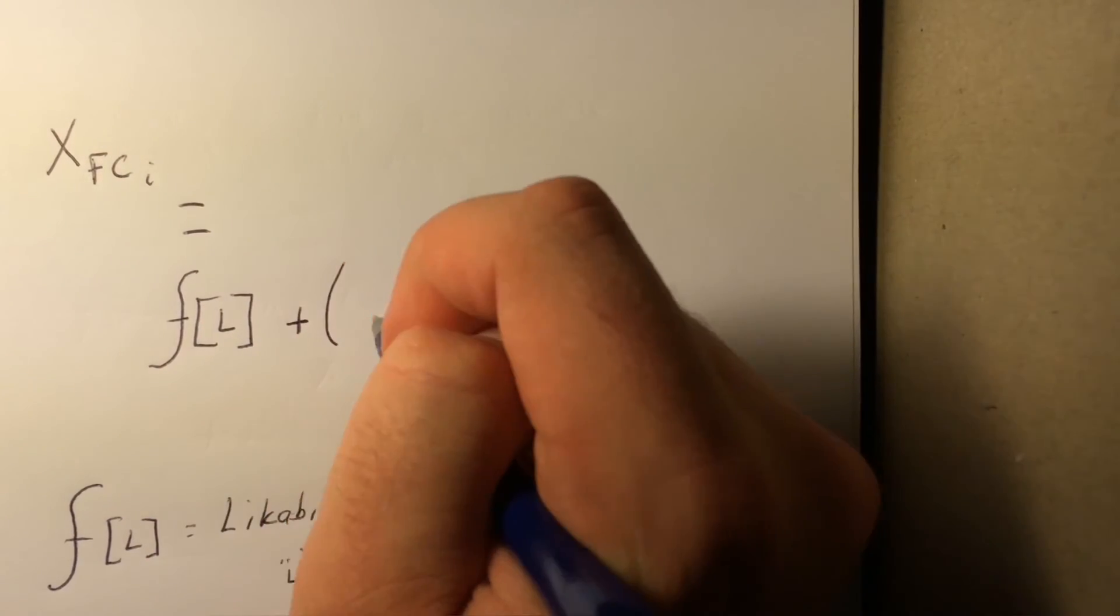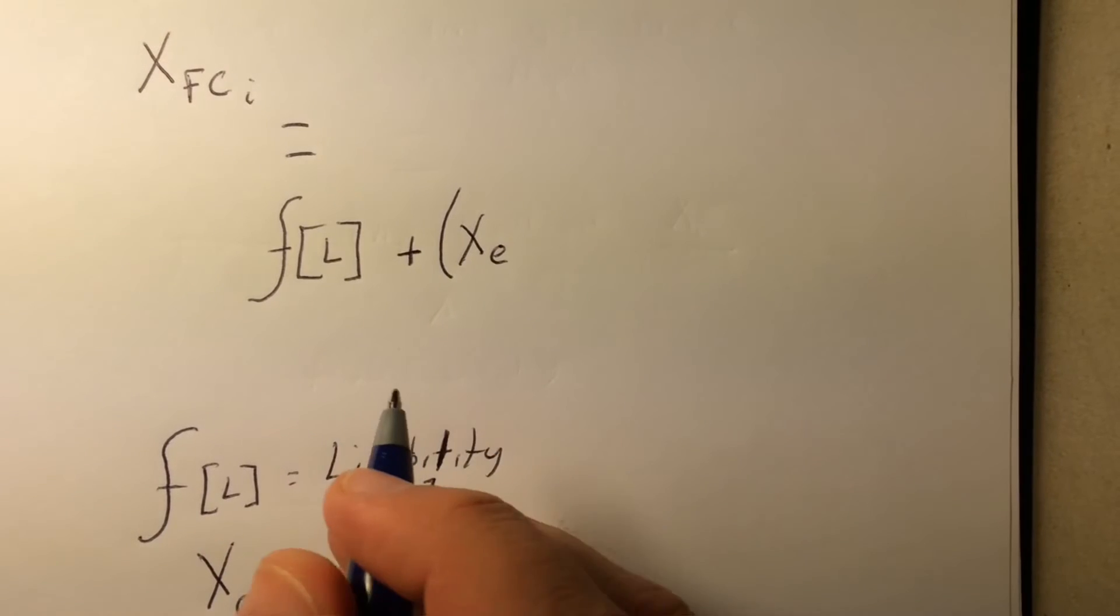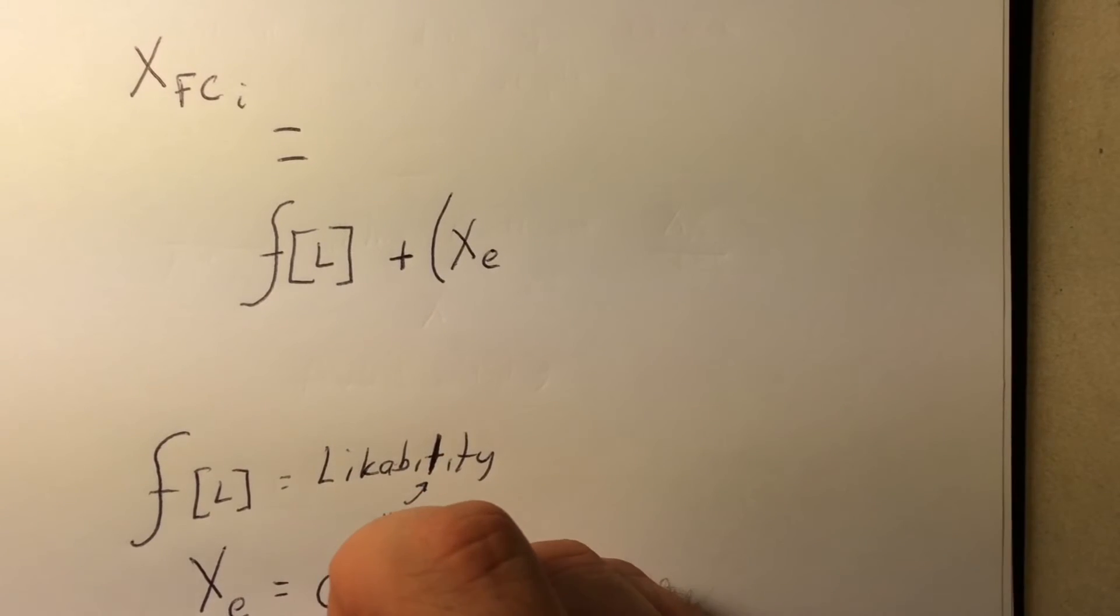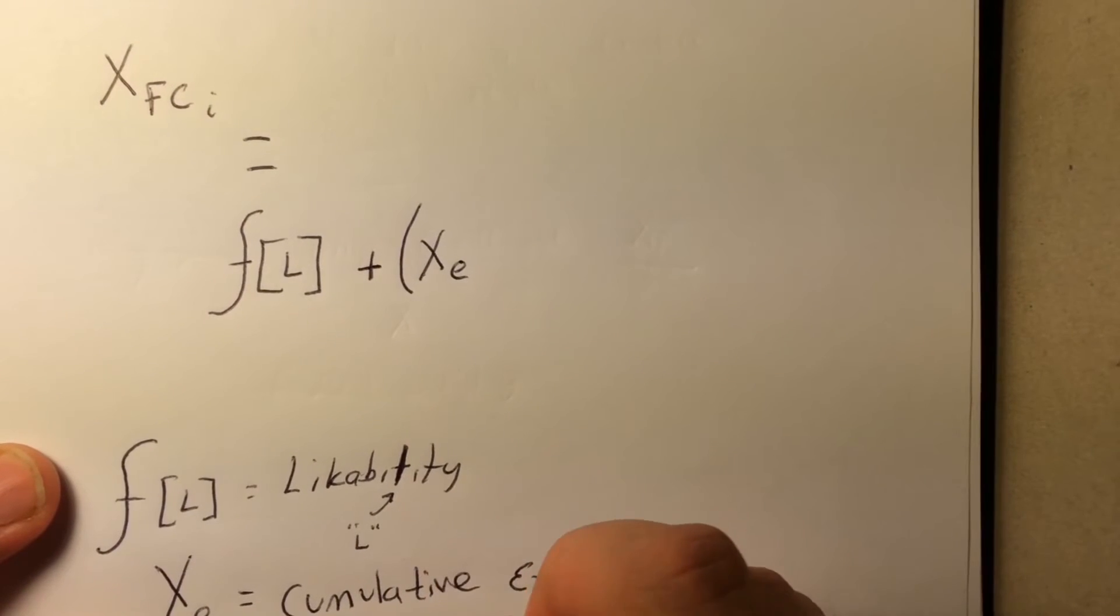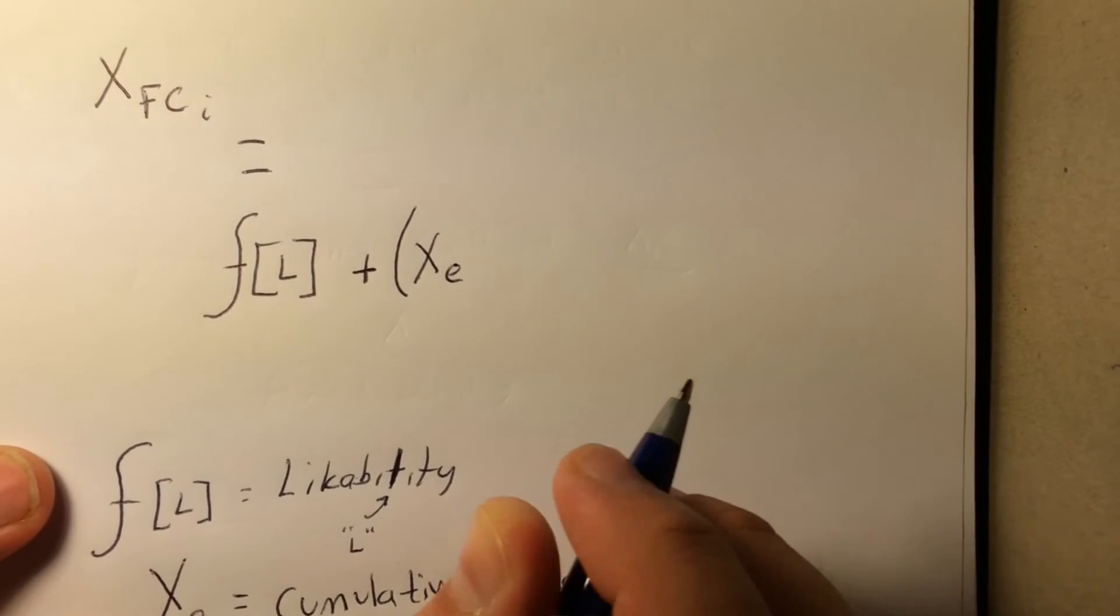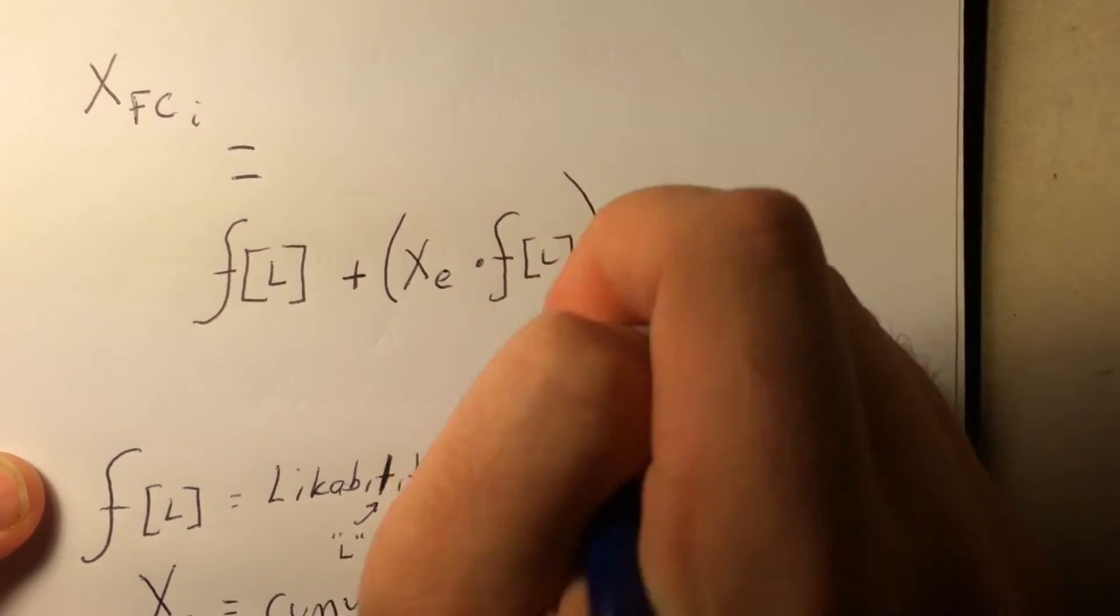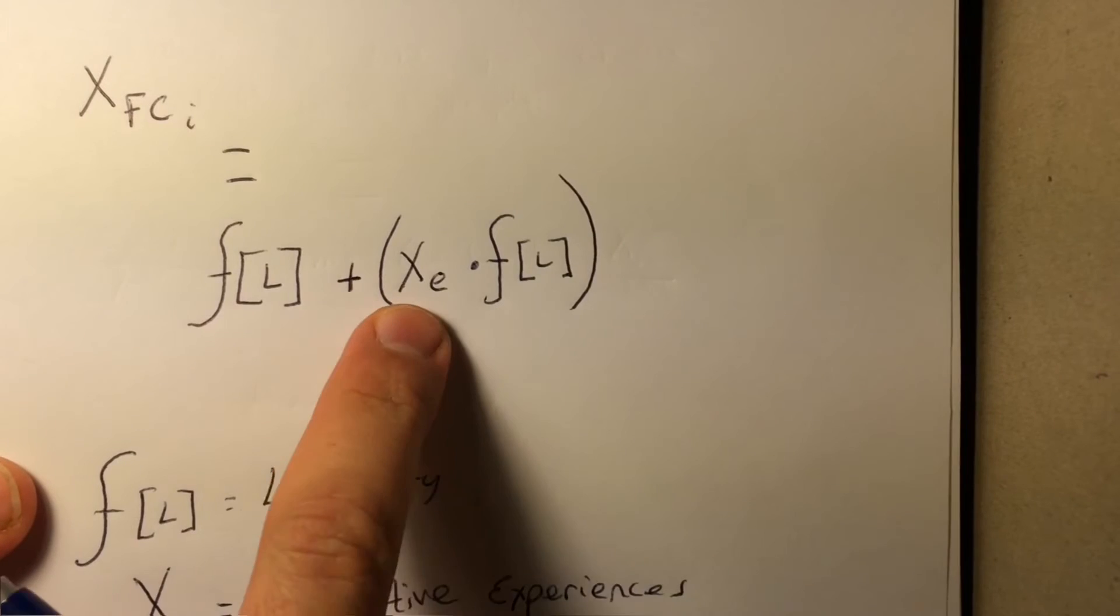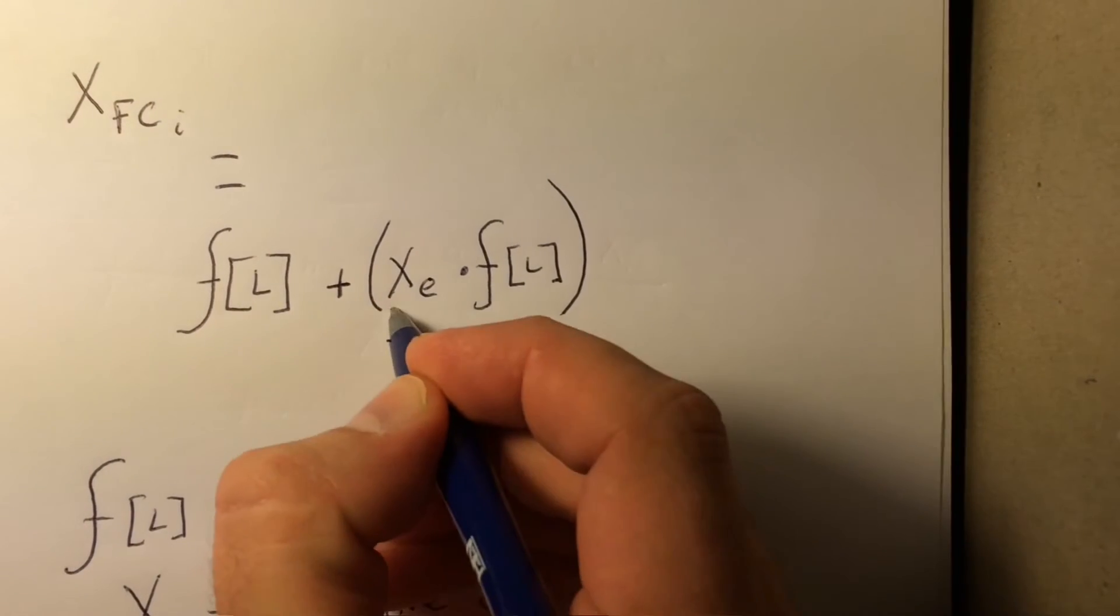All right. This next part is the reason why we left Stonebridge. It's a variable which represents the cumulative amount of one's shared experiences with another, times a function of their likeability once more. Let me dive deeper. And I'm running low on epic music, so we need to finish this right here and now.